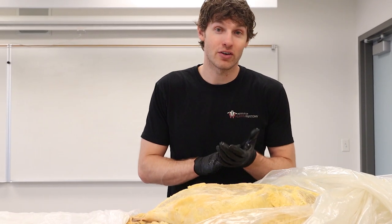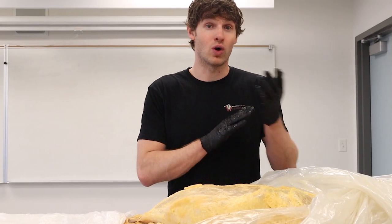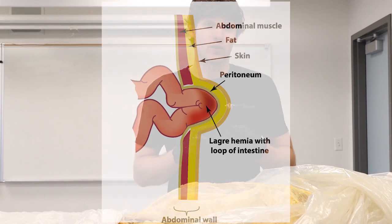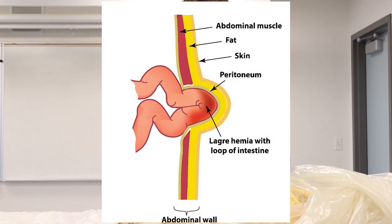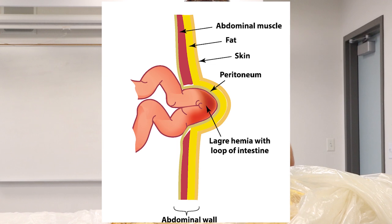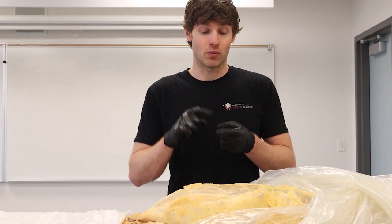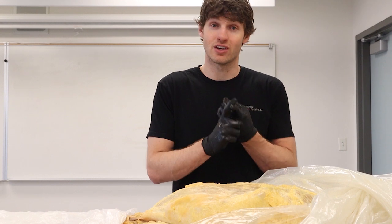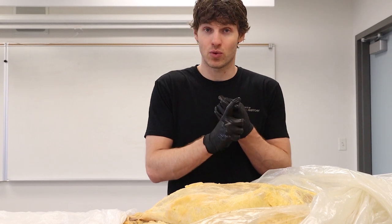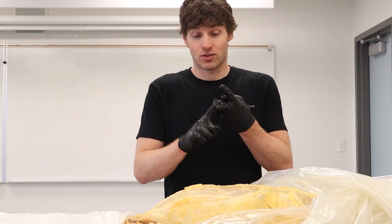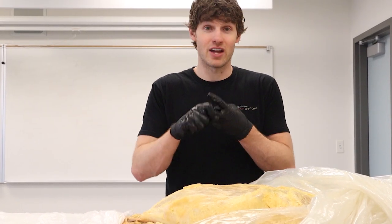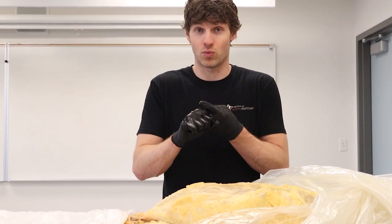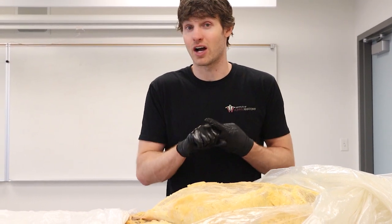The first thing we want to talk about is what the definition of a hernia is. Simply, a hernia is an organ or part of an organ that protrudes through the abdominal wall. There are two types of hernias we want to focus on: one is a ventral hernia, the second is a groin hernia. Ventral hernias tend to affect women more. Groin hernias — also subdivided into inguinal hernias and femoral hernias — tend to affect men more.